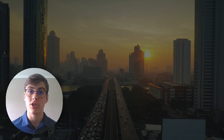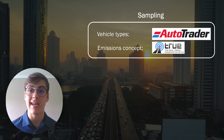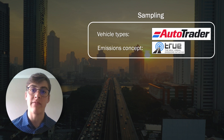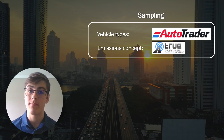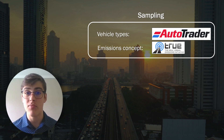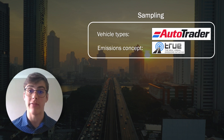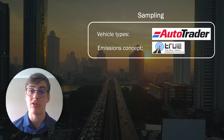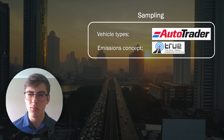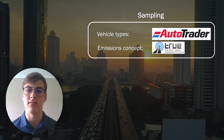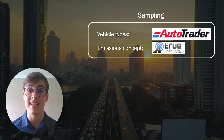We started by sampling from second-hand car sales to get a handle on what the vehicle types in Gauteng are. Random sampling gives us a pretty good idea of what the population looks like while only considering a small subset of vehicles, which saved us a lot of time.